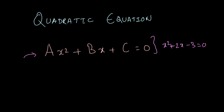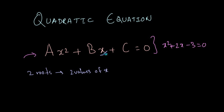Such an equation is a quadratic equation. The peculiar feature of a quadratic equation is that it has two roots. These two roots are two values of x. This variable x has got two values, and these two values satisfy this equation. When you put these values into this equation, both of them satisfy it — that is, the left hand side and the right hand side come out to be equal.